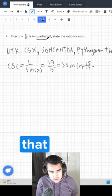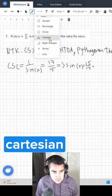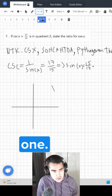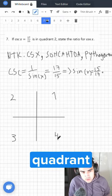So we also know that it's in quadrant 2. We can draw our Cartesian plane right here. And this is 1, this is 1, this is 2, this is 3, and this is quadrant 4.